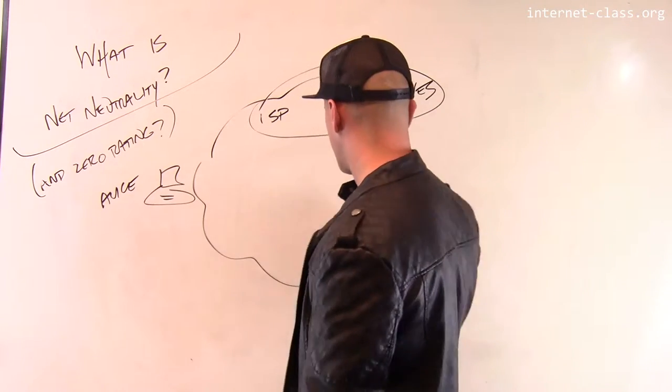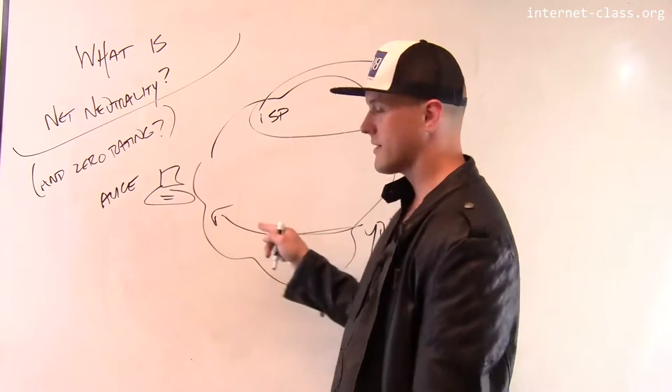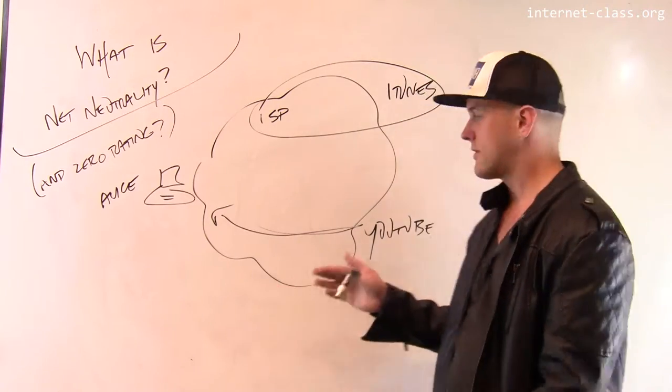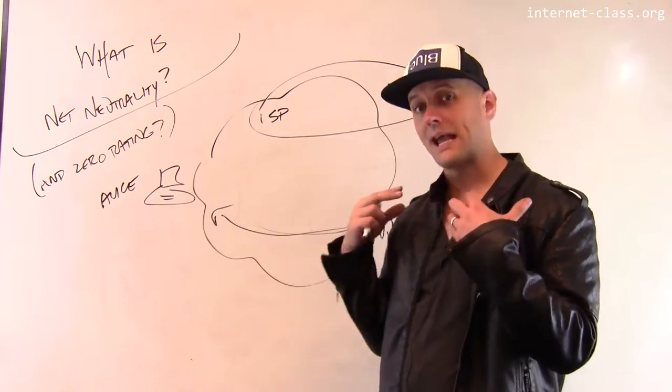But let's say that when Alice tries to connect and stream from YouTube, the ISP starts to drop some of these packets on purpose. What's going to happen? So her TCP connection is going to assume that these drops are caused by congestion.